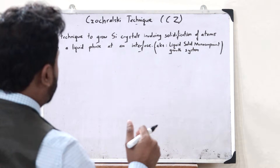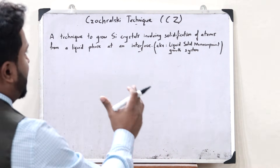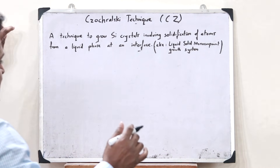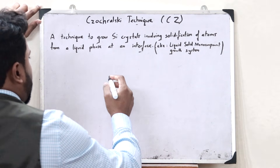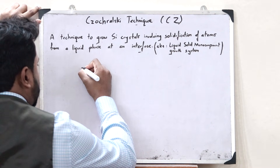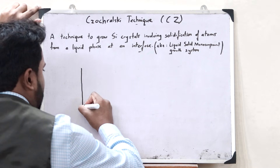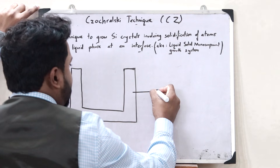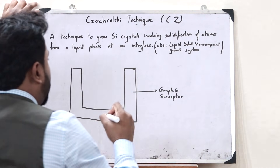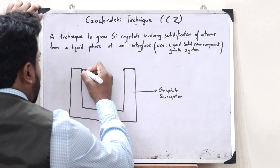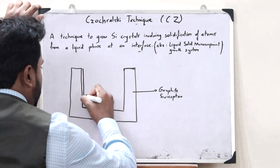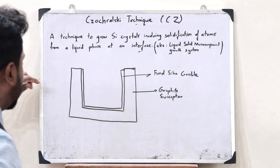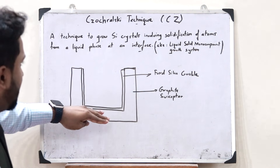Let us now construct the apparatus required to produce silicon crystals using the Czochralski technique. First, let us construct the furnace. The main component of the furnace is a particular graphite susceptor. This graphite susceptor is used to support a fused silica crucible. It is inside this fused silica crucible that we now pour silicon crystals.